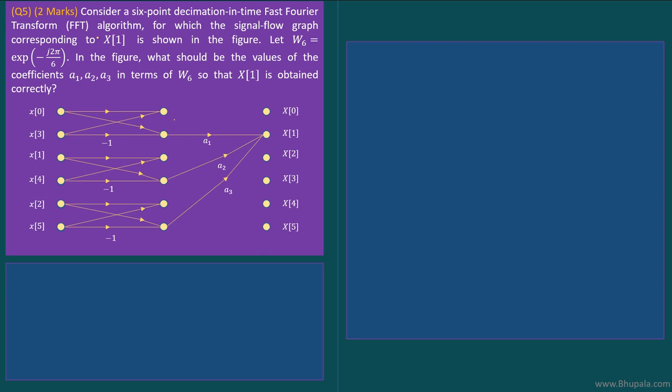The problem goes like this: six-point decimation-in-time Fast Fourier Transform algorithm. We are interested in finding the value of X(1), and it is asked what should be the scaling factors for the butterfly diagram: a1, a2, and a3.